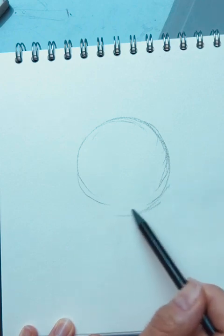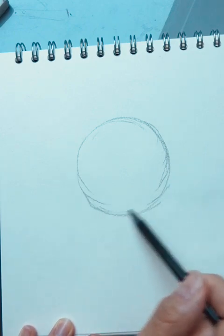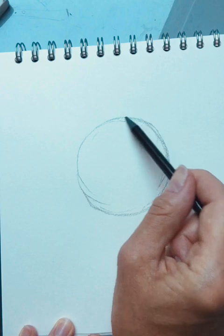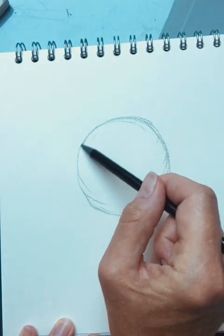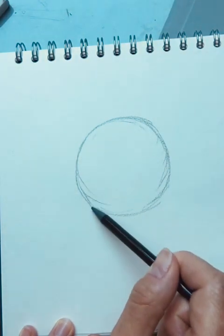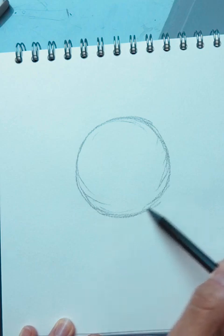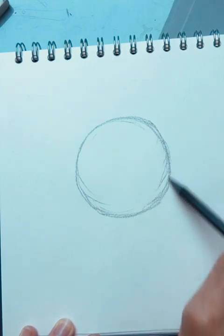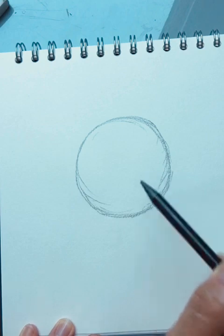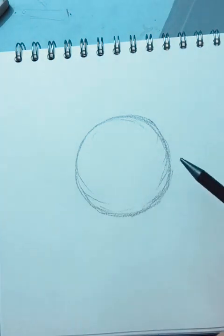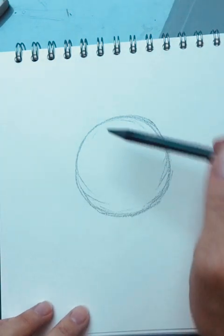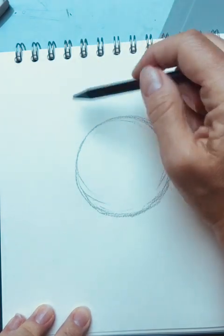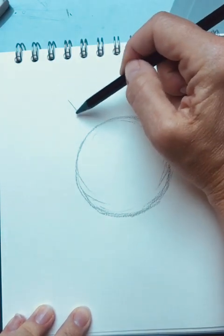Because we're going to be creating our tonal shading on here to create a sphere shape. But when drawing objects, you need to work out first where your light source is coming from. I'm going to suggest that mine is coming from this direction here.